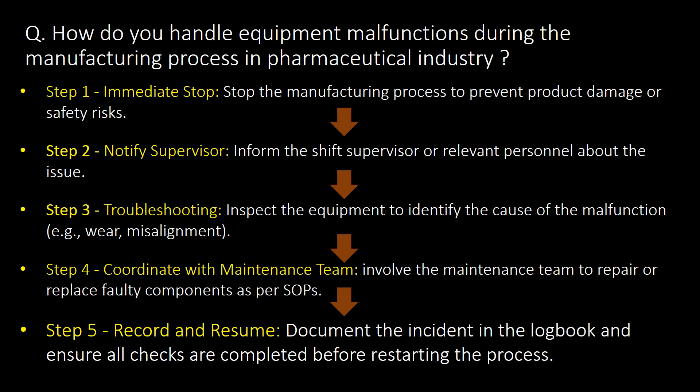Step 2 - Notify supervisor: Inform the shift supervisor or relevant personnel about the issue. Step 3 - Troubleshooting: Inspect the equipment to identify the cause of the malfunctioning. Step 4 - Coordinate with maintenance team: Involve the maintenance team to repair or replace the faulty components as per SOPs.